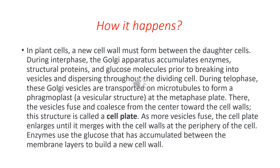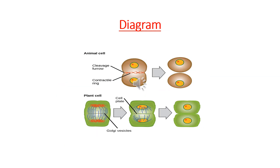In this diagram you can clearly see that in animal cells a cleavage furrow forms in the center — a contractile ring — splitting into two daughter cells. In plant cells, a cell plate is formed, splitting into two daughter cells. The only difference is the furrow in animal cells and the cell plate in plant cells.